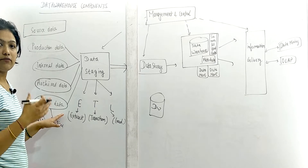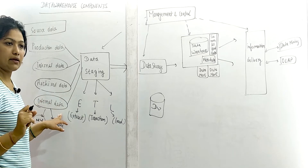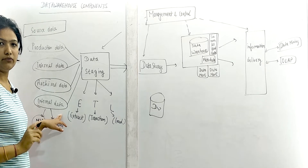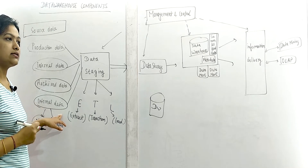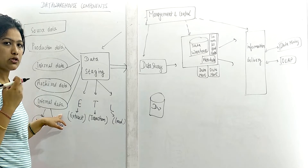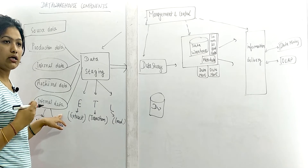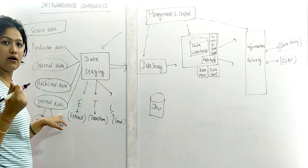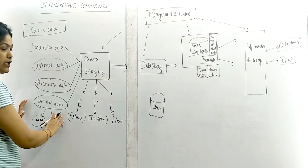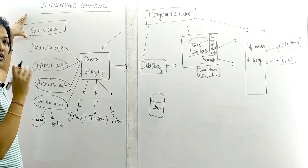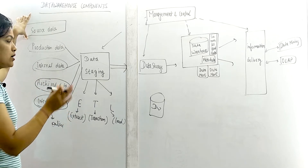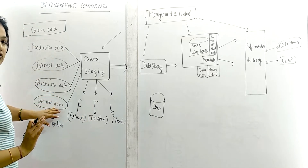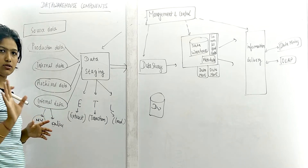For external data, suppose I searched something online, or I met some previous employees of that company and collected information — what were the positive and negative points, what techniques were used, which gave profit, which gave loss, what plans made employees happy. So source data means from where we are collecting the data: production data, internal data, archive data, or external data like newspapers and Google.